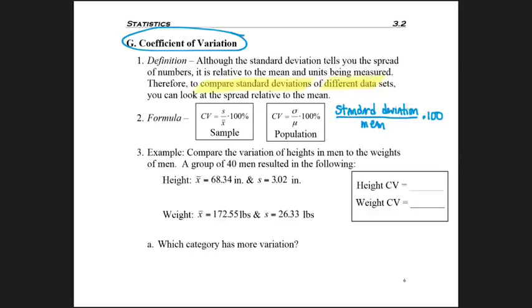So let's go ahead and do part three, this example, where we're asked to compare the variation of heights of men to weights of men. They took a group of 40 men and calculated some information from them. Notice because it was only 40 men and not all the men in the world, we're taking a sample average and a sample standard deviation, which is X bar and S for the heights and the weights of these 40 men.